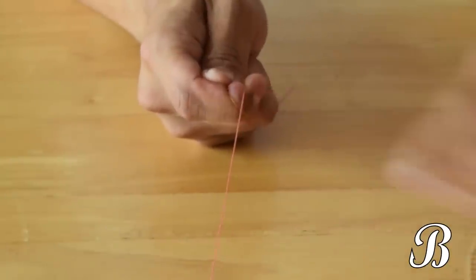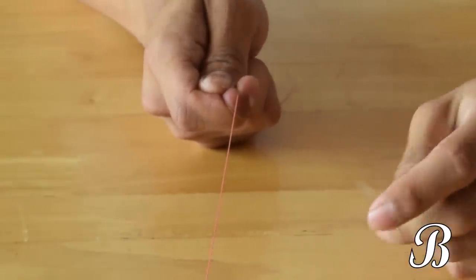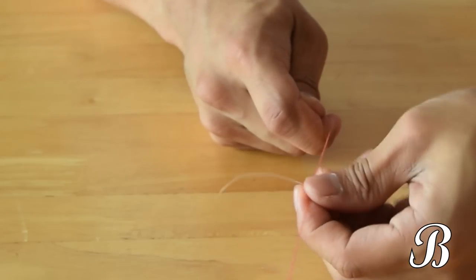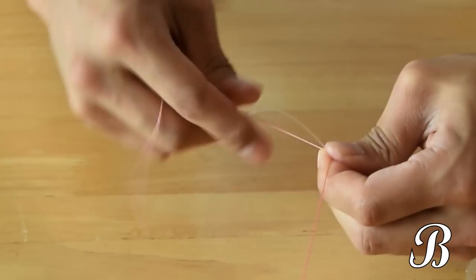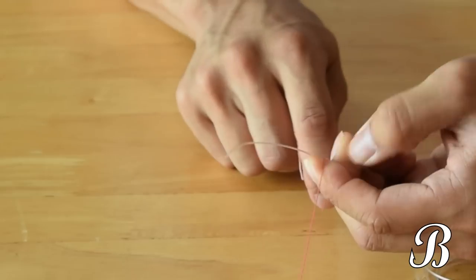So first up, you want your line nice and tight. And then we take the shock leader and cross it over the line like this. And then we take the tag end of the braided line and wrap it over the shock leader like this.